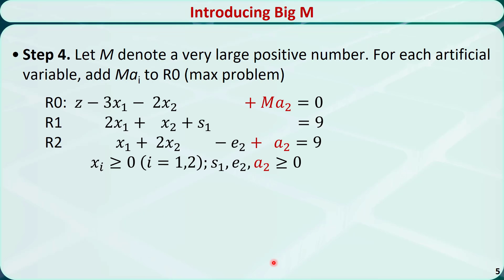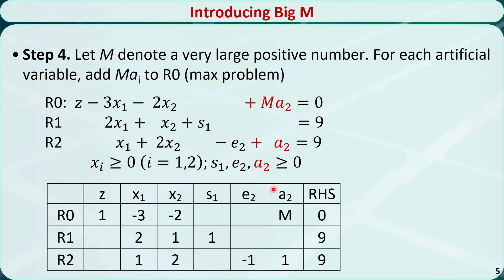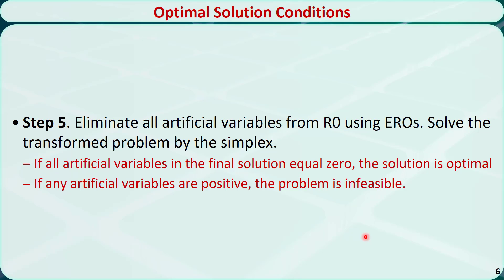In step 4, we let M denote a very large positive number. For each artificial variable, add M times a to row 0 for the maximization problem. This modification makes it extremely costly for an artificial variable to be positive. After that, we rewrite the problem in the simplex tableau. Step 5: eliminate all artificial variables from row 0 using elementary row operations. Solve the transformed problem by the simplex method. If all artificial variables in the final solution equal 0, the solution is indeed an optimal solution. If any artificial variables are positive, we have a fake optimal solution and the problem is infeasible.